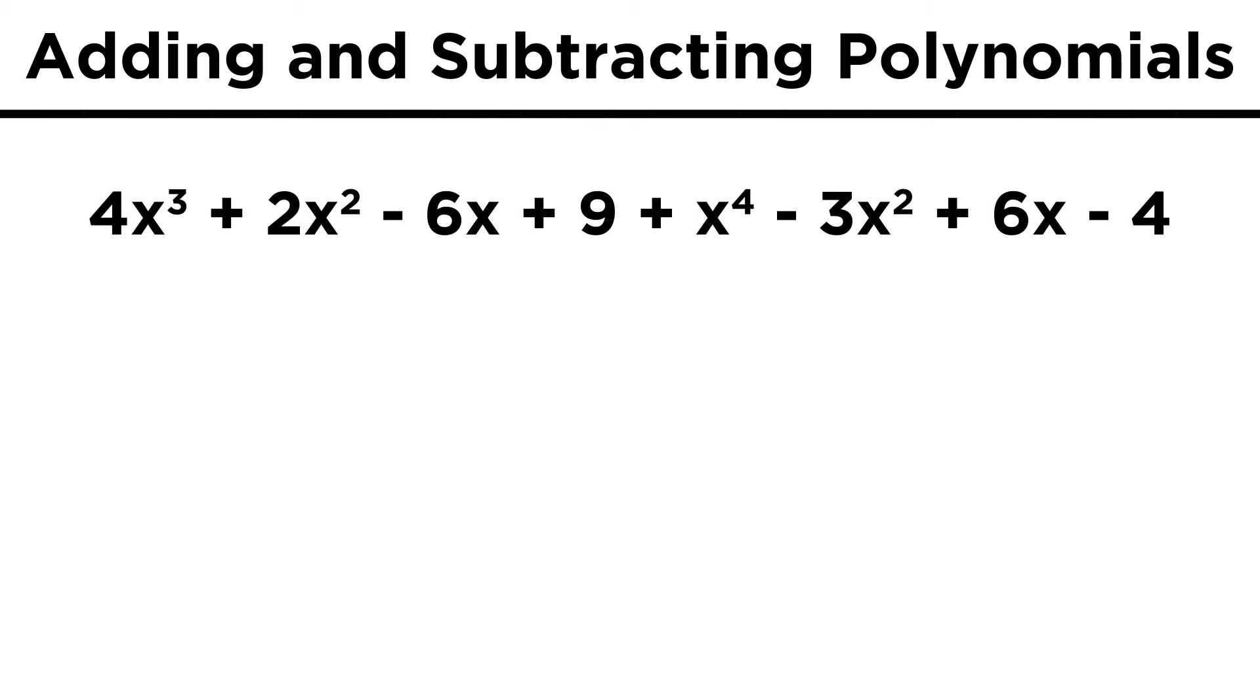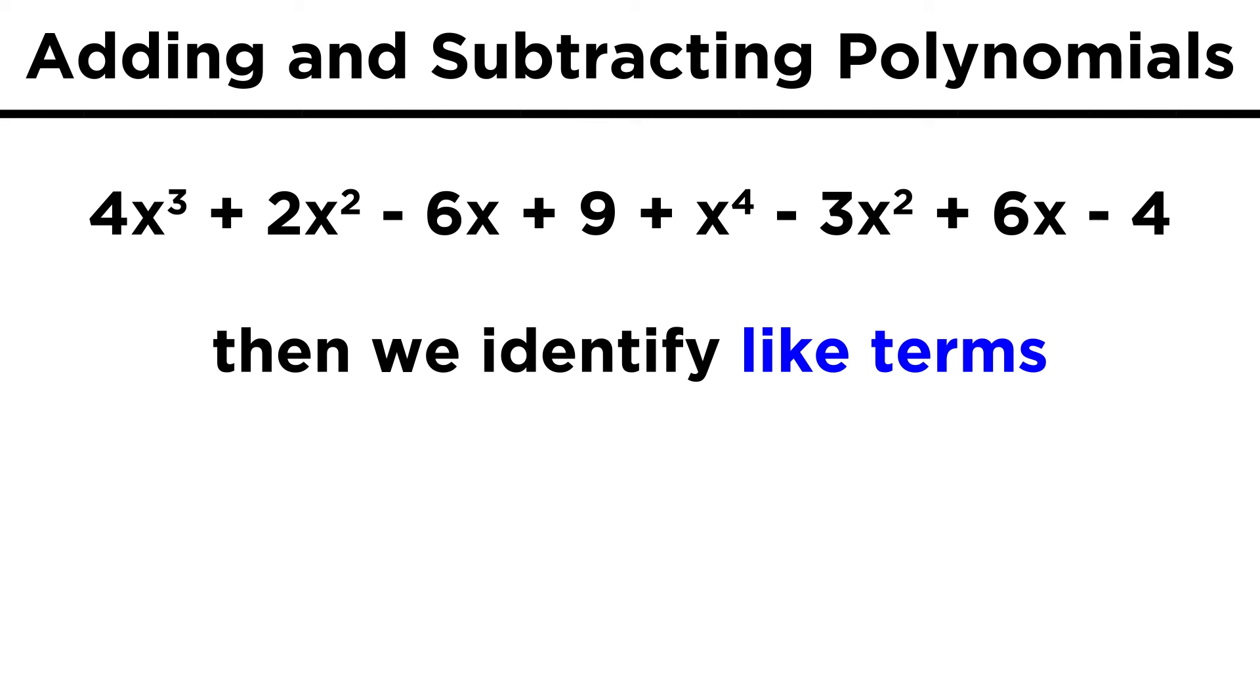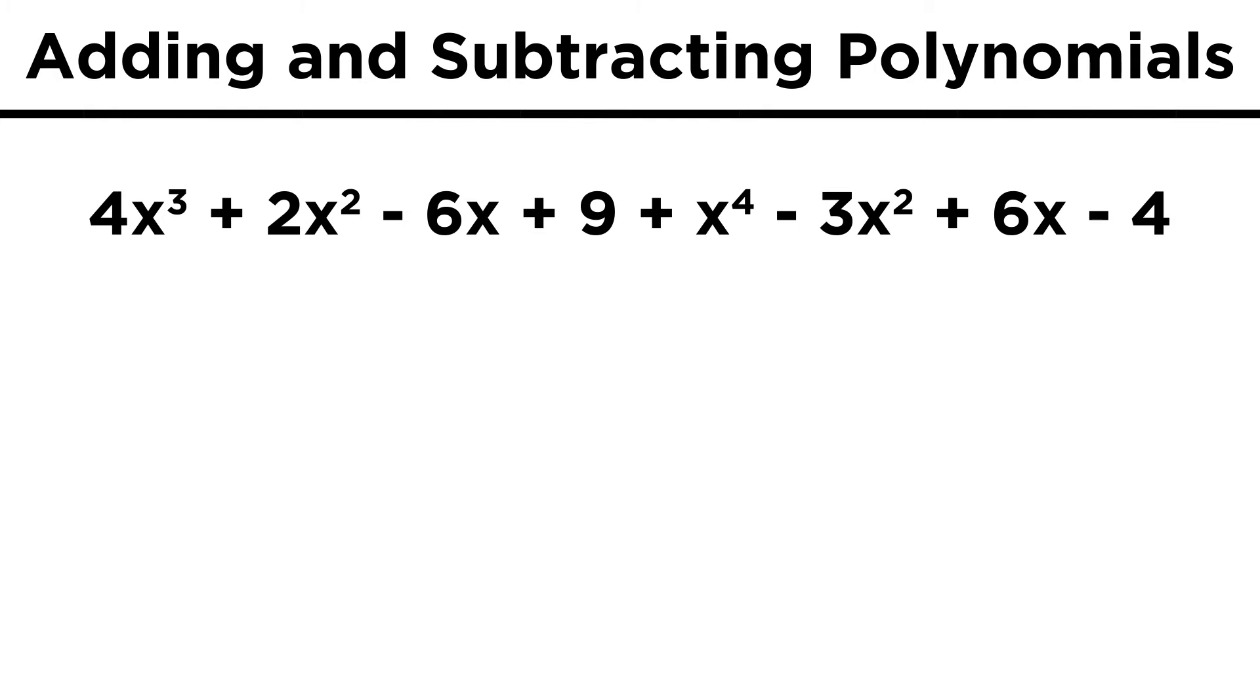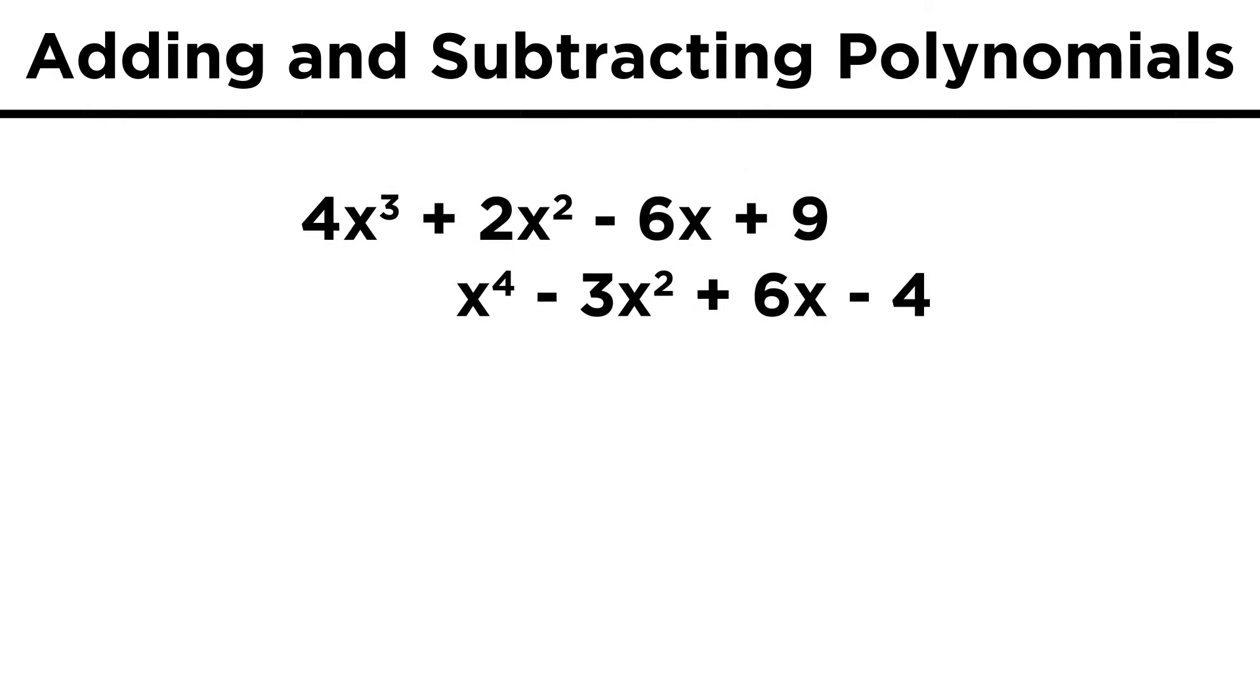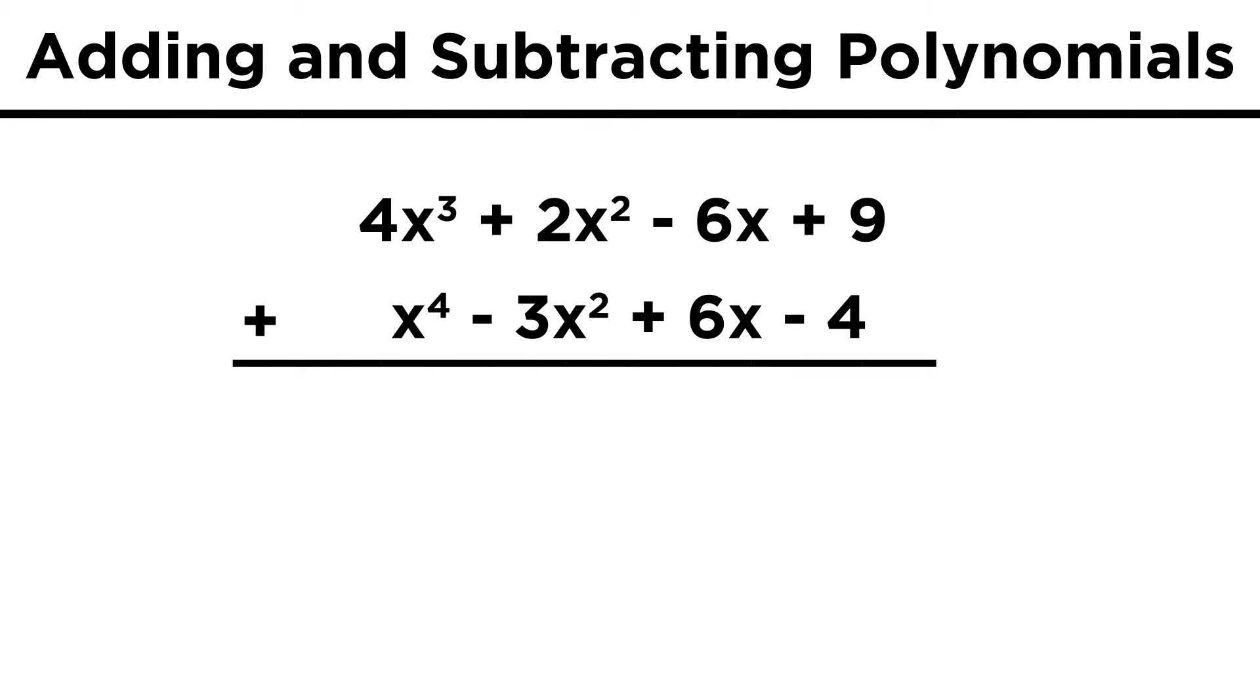We could just write a new expression with all of these terms in a line, if we wanted. Then it's just a matter of identifying like terms and adding them together. However, a slightly tidier approach, if you value that sort of thing, could involve putting one expression over the other, so that we can do arithmetic just the way we did with small numbers.